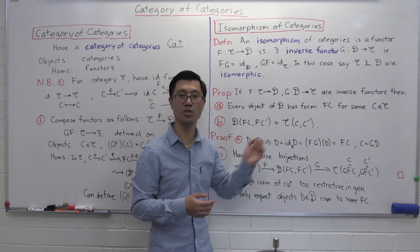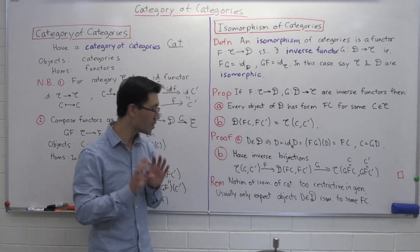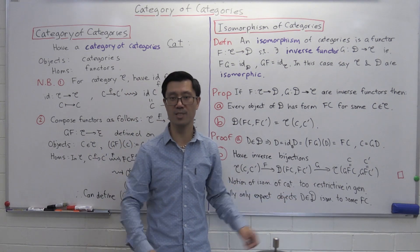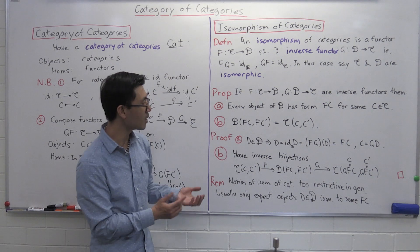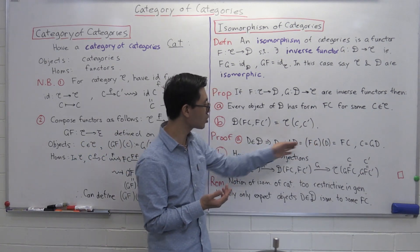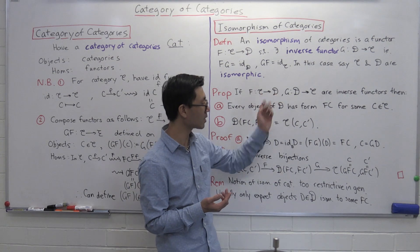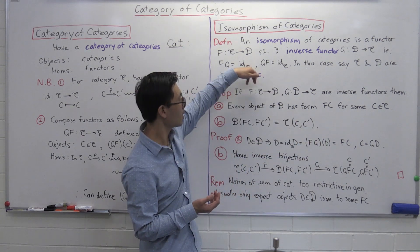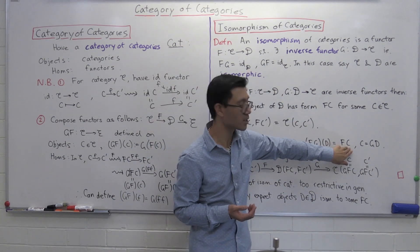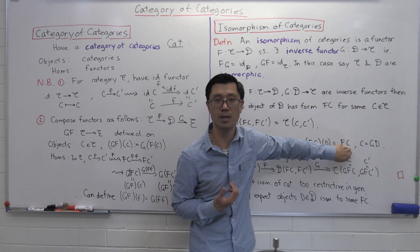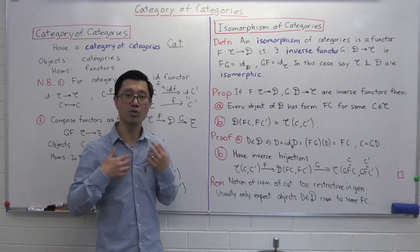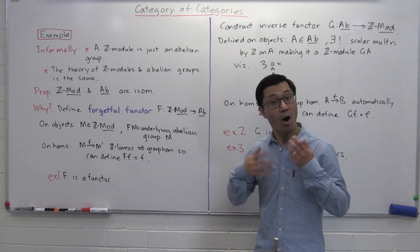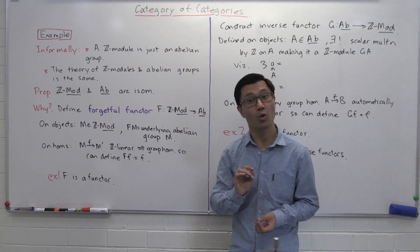If you have an isomorphism of categories, the objects match up precisely and the Homs match up via a canonical bijection. Unfortunately, this notion of isomorphism of categories is actually too restrictive in general. Usually with two different categories you'd only expect every object to be isomorphic to something of the form FC, not actually equal to it. Fortunately, in the next video we'll look at a more general notion called the equivalence of categories. Isomorphisms of categories are fairly rare.